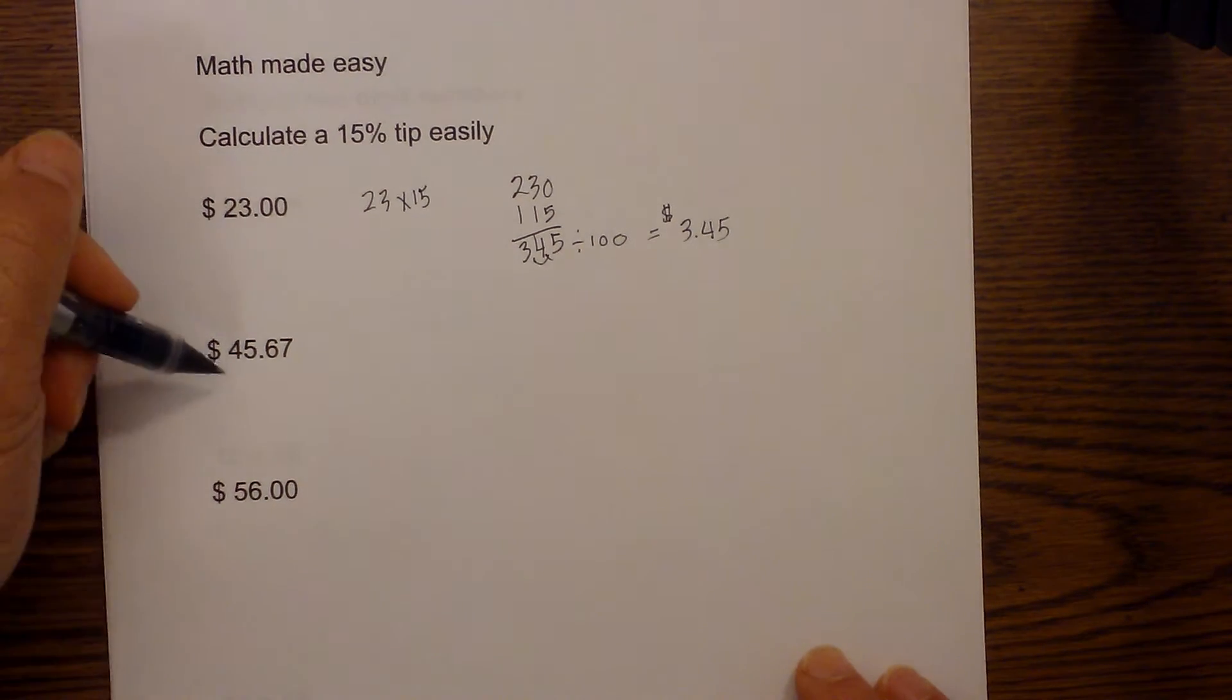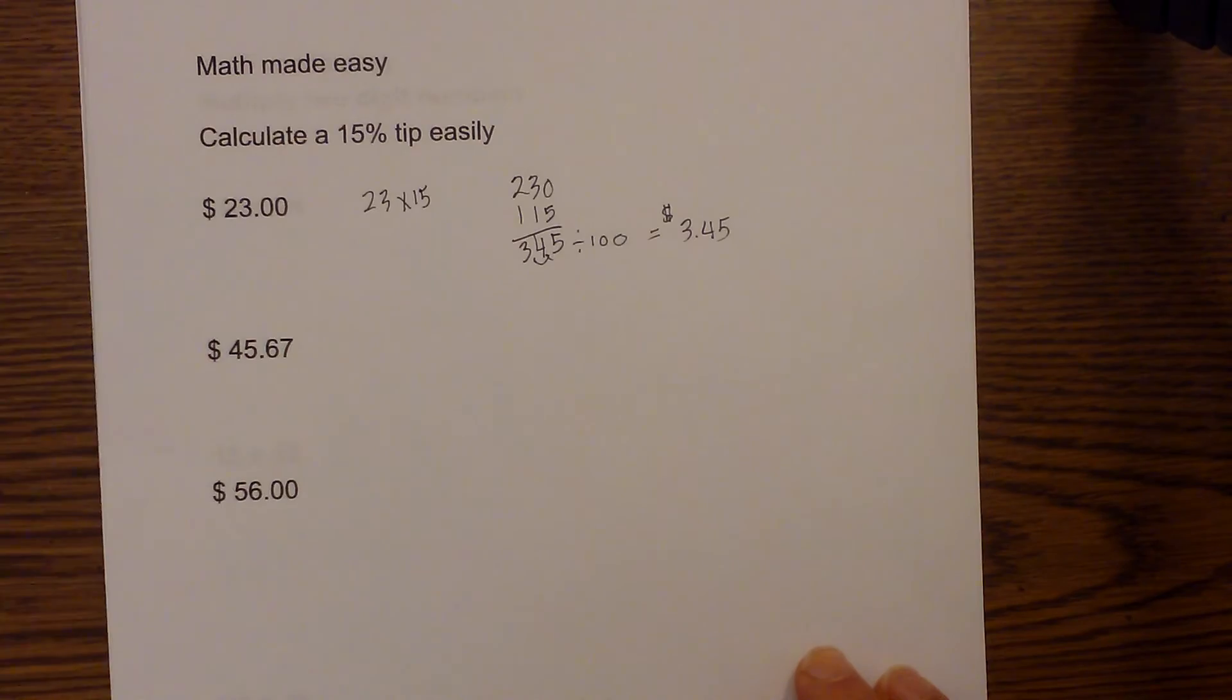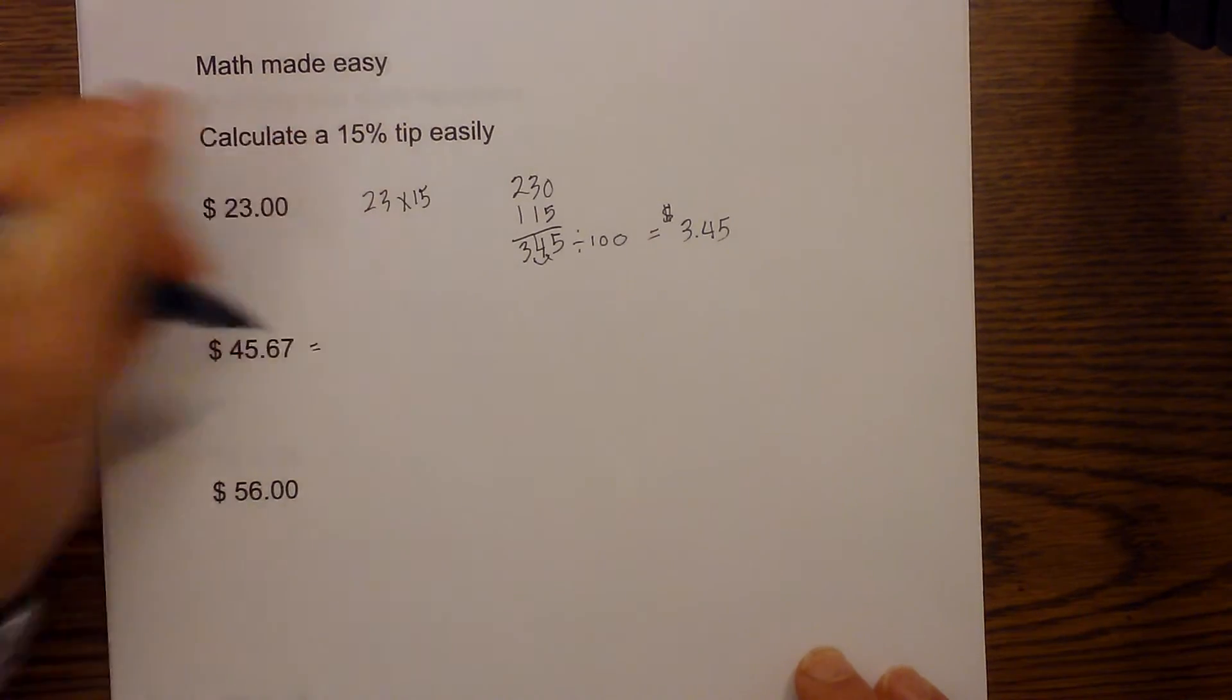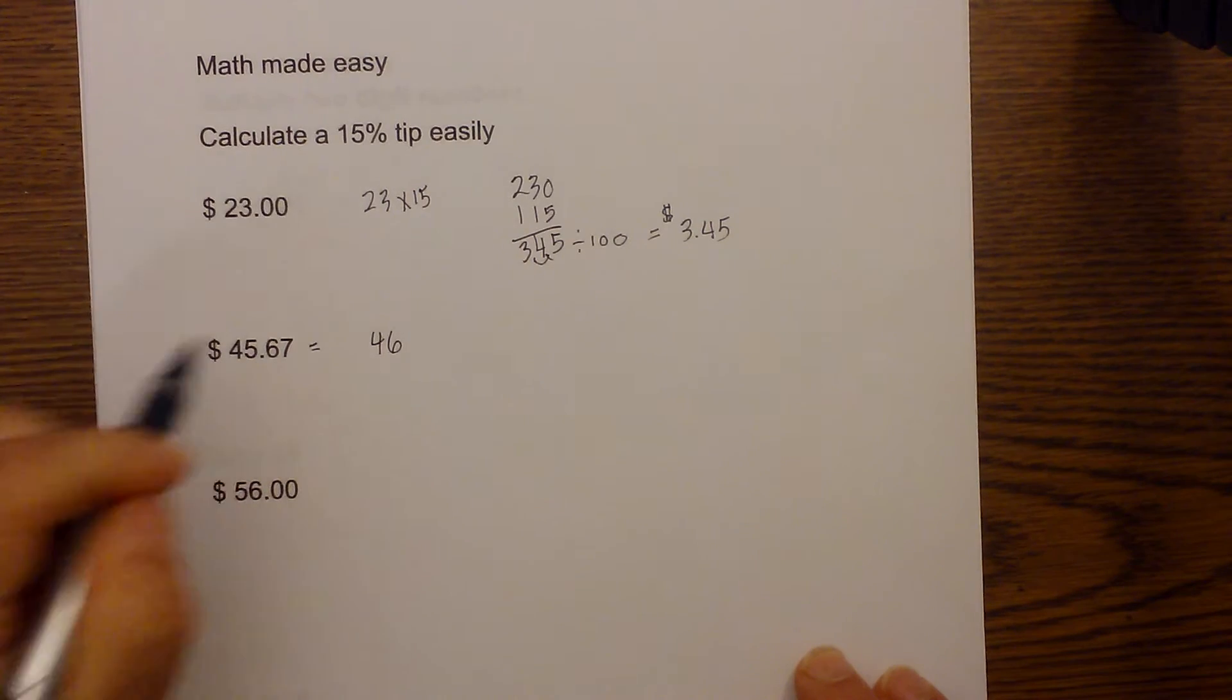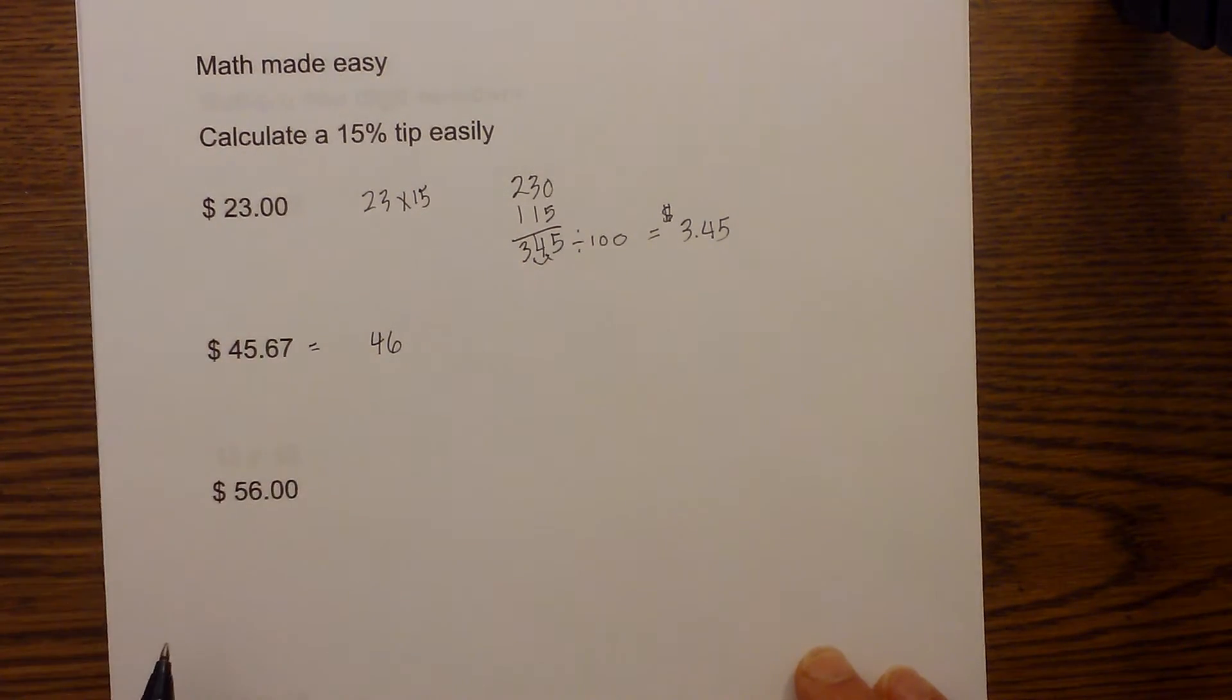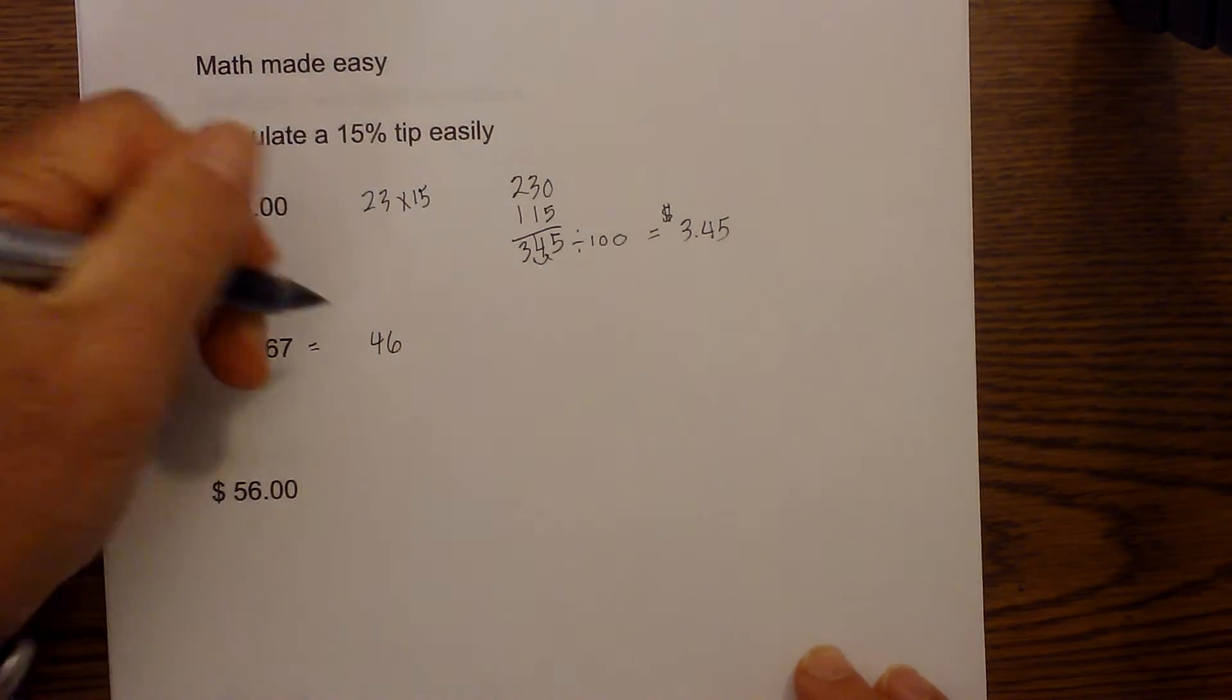Now what if your bill came back $45.67? What I would do, since we are just calculating a 15% tip, I would just round that to 46. You could do it the other way but that gets kind of tricky. Just give the waitress or waiter the benefit of the doubt, round it up to 46.